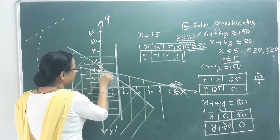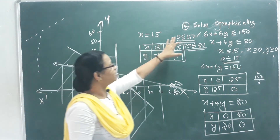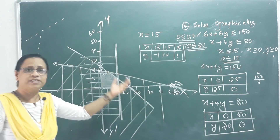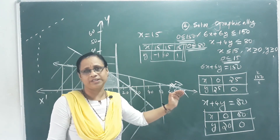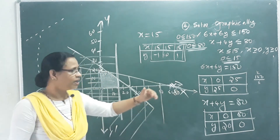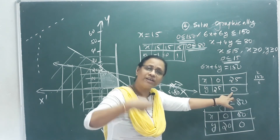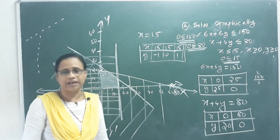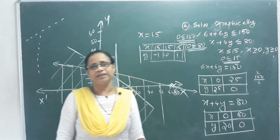This shaded region is the feasible region — the solution set of all the inequalities combined. For an exam question, you may also need to identify the vertex points of this feasible region. This is a very important chapter. Okay, all the best!